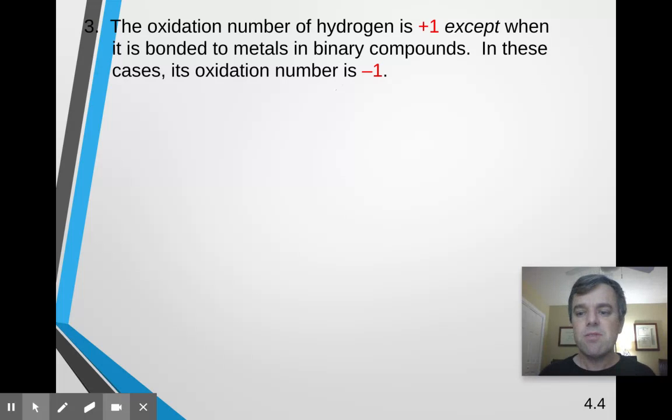Because as you'll soon see, a distinguishing factor of metals. Metals, if you'll remember, they lose electrons and form cations. So metals have positive charges. So if hydrogen is bonded to a metal, then hydrogen has to take on the negative charge because metal has the positive charge.